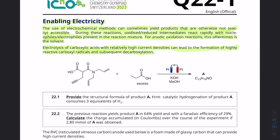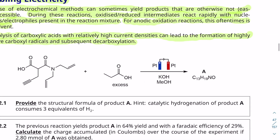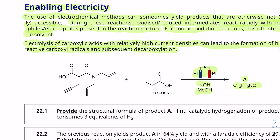So what this is telling me is basically the first step of the mechanism. We have this molecule, which is basically a carboxylic acid with an alkyne and two alkene sections, and also an imide bond. And then we have propanoic acid. We electrolyze it in potassium hydroxide and methanol, and we get A, which is 13 carbons, 19 hydrogens, 1 nitrogen, 1 oxygen.